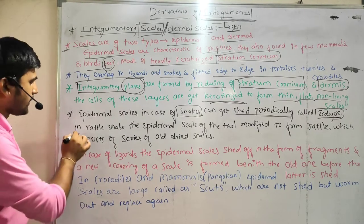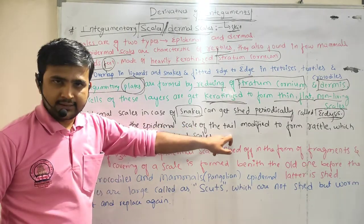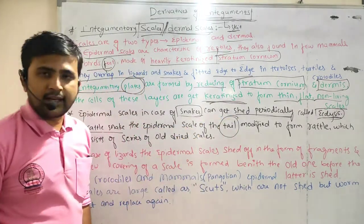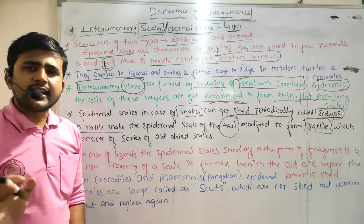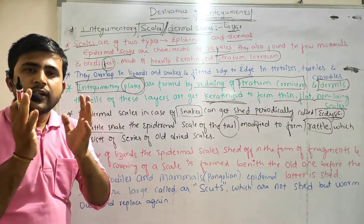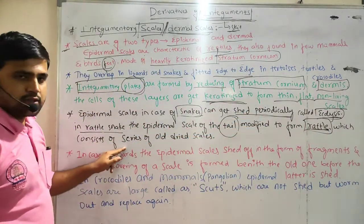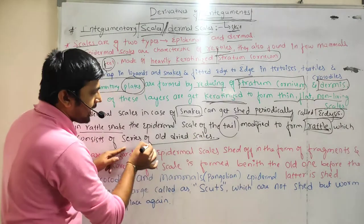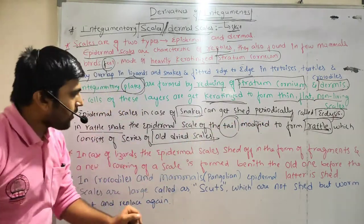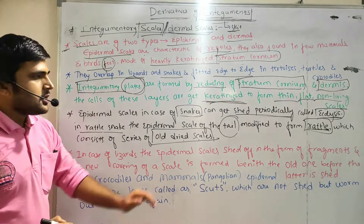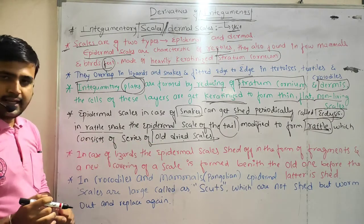In the rattle snake, the epidermal scales of the tail are modified to form a rattle. What is a rattle? It is a part of the tail that is modified, and it consists of old dried scales. The rattle is made up of old dried scales.